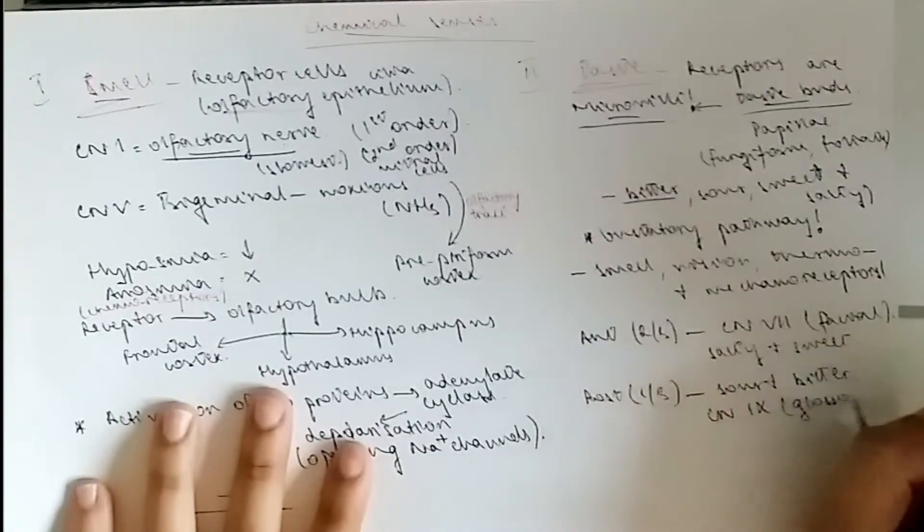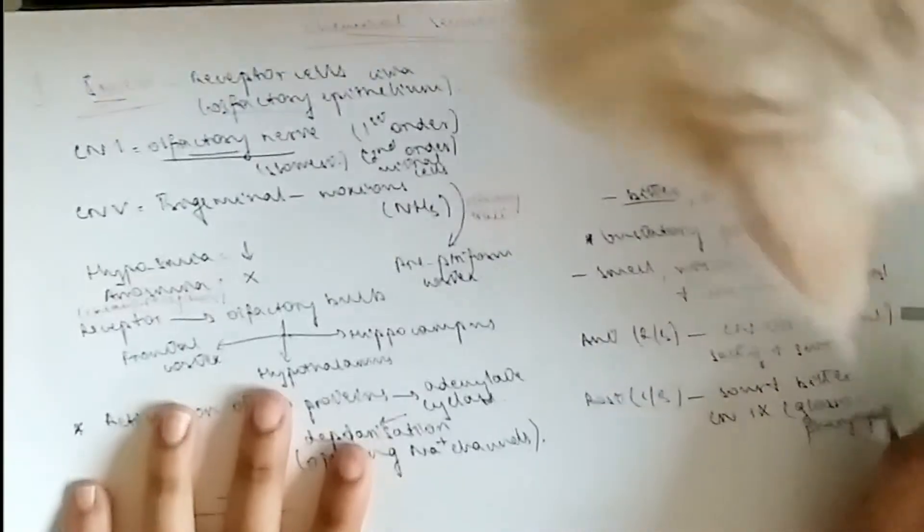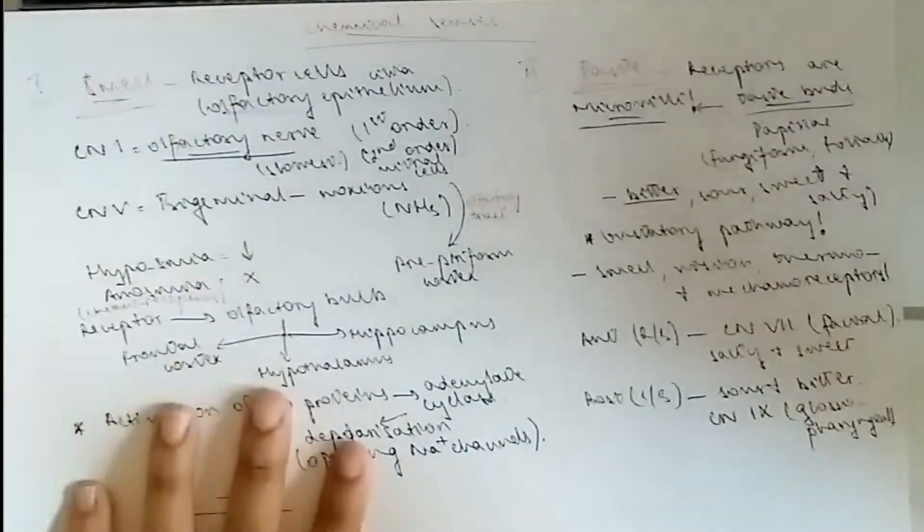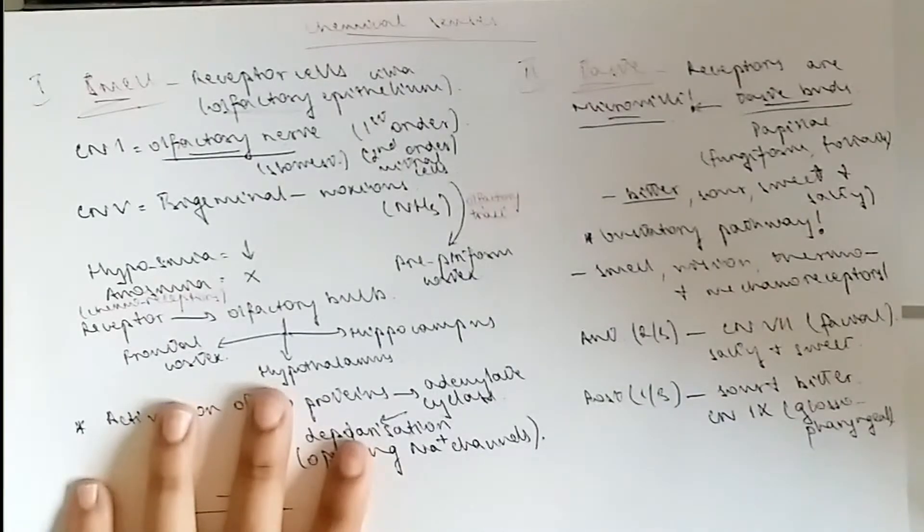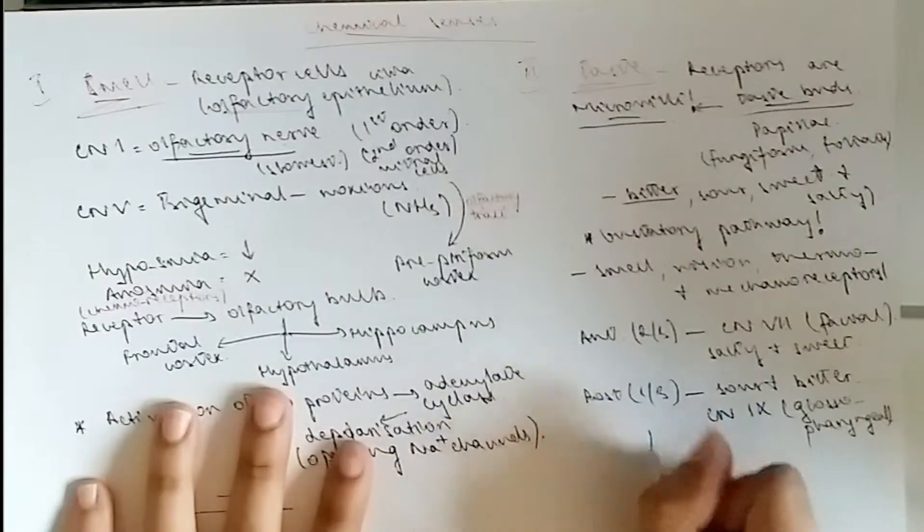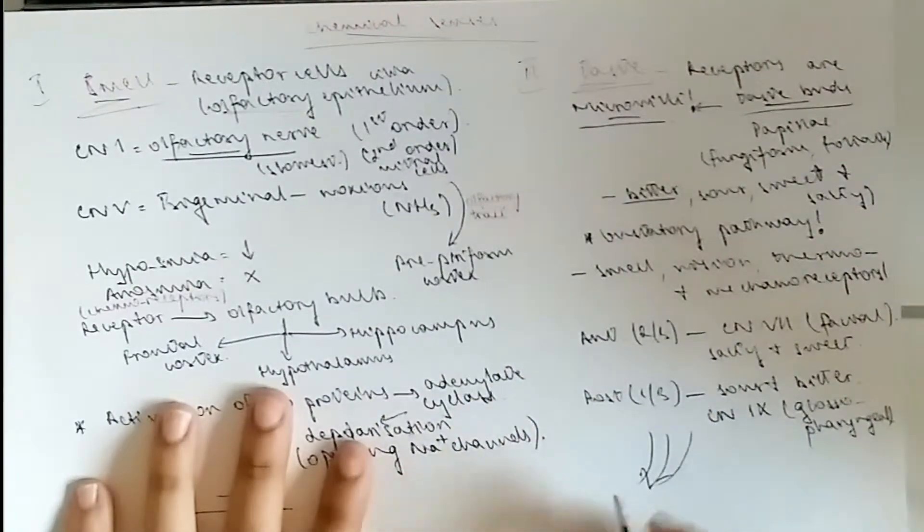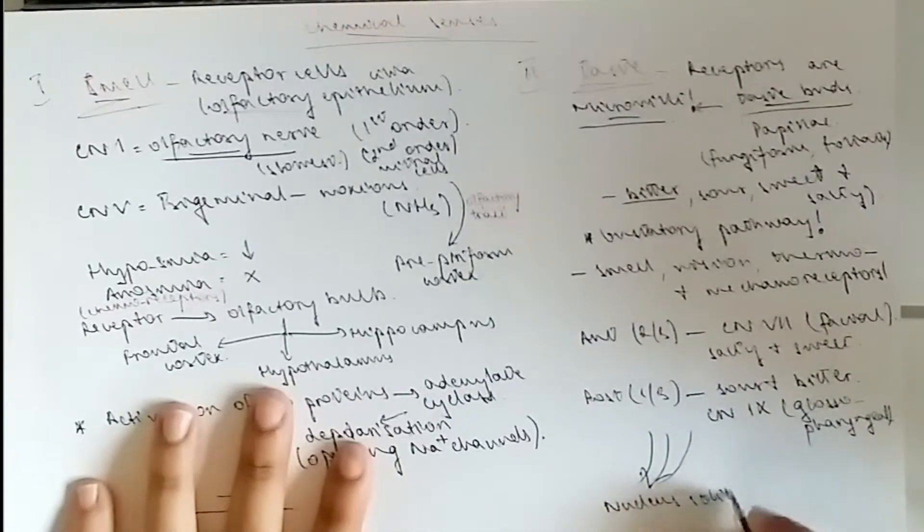Now speaking about the pathway, both these nerves, even the vagus nerve, they go to the nucleus solitarius, or the nucleus of the solitary tract. Obviously the tract to there is called the solitary tract.